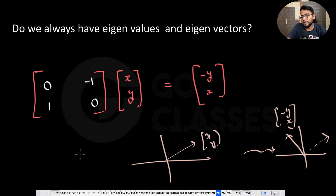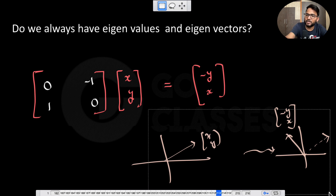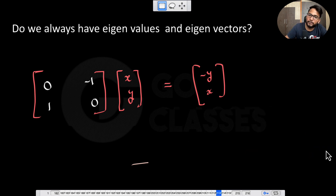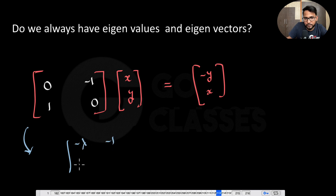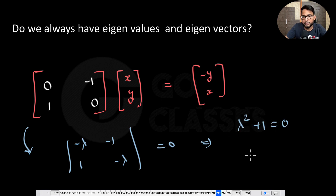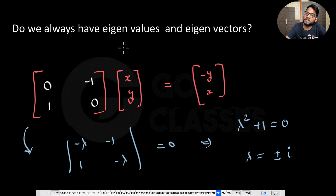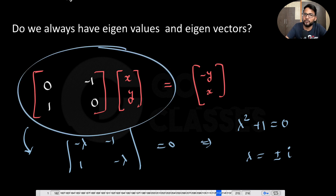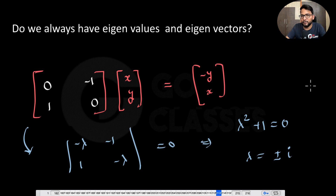Calculating eigenvalues of [[0, −1], [1, 0]]: the characteristic equation gives λ² + 1 = 0, so λ = ±i. The eigenvalues are imaginary, meaning there are no real eigenvalues or real eigenvectors for this rotation matrix. It is not always necessary to have real eigenvalues — they can be imaginary.